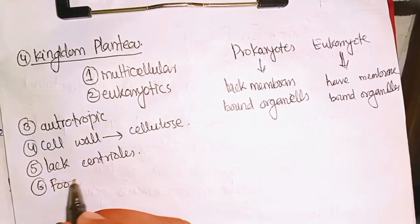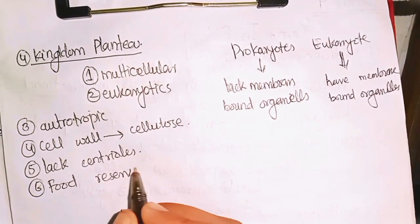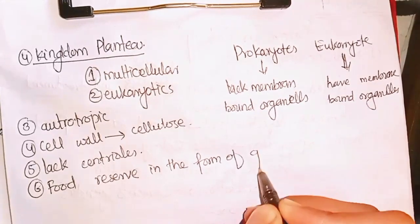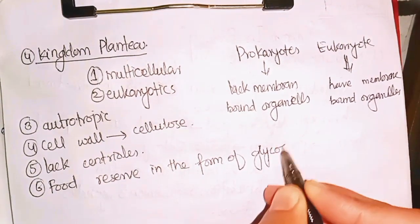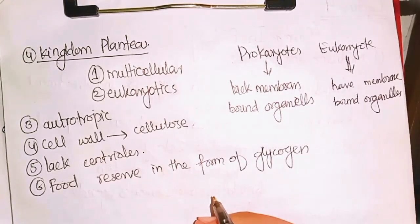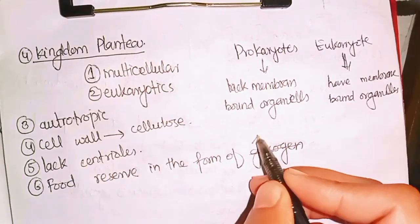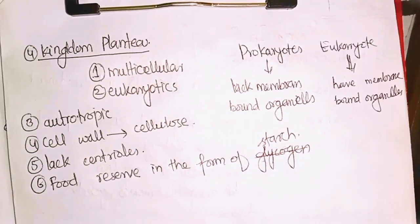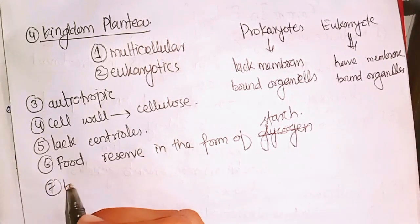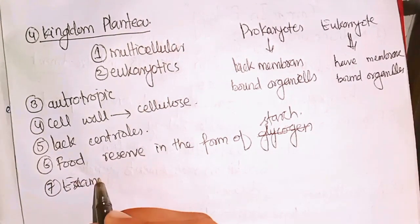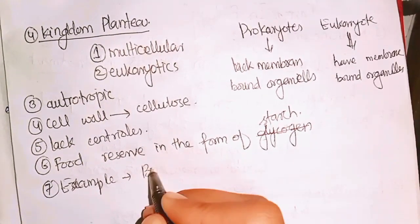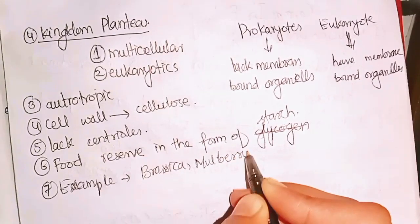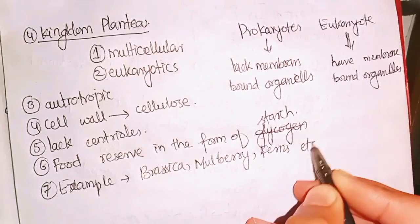In Kingdom Plantae, food is stored in the form of starch. Examples include Brassica, mulberry, and other plants.